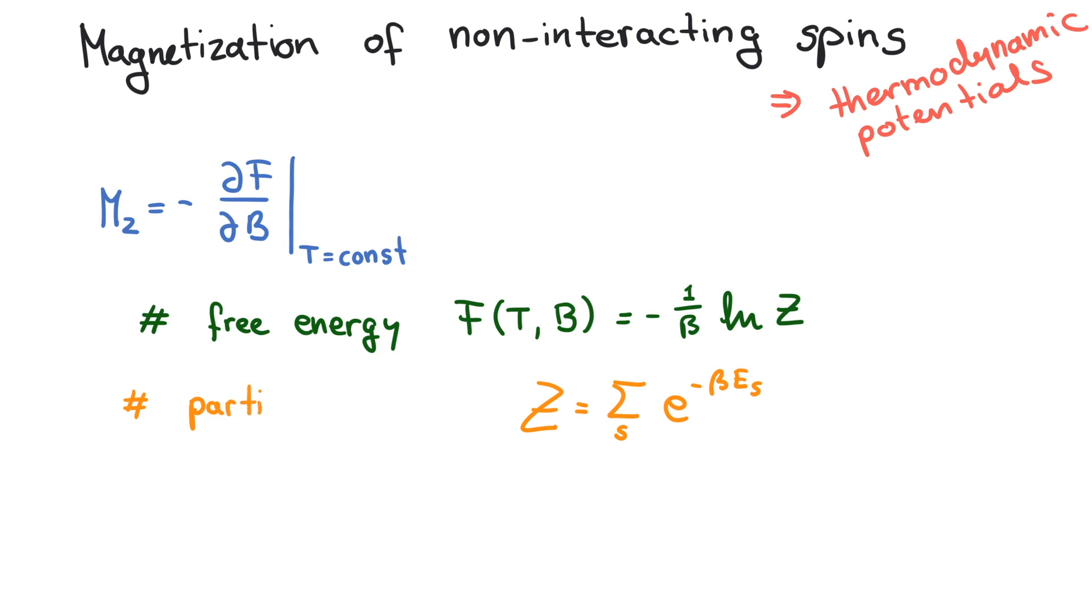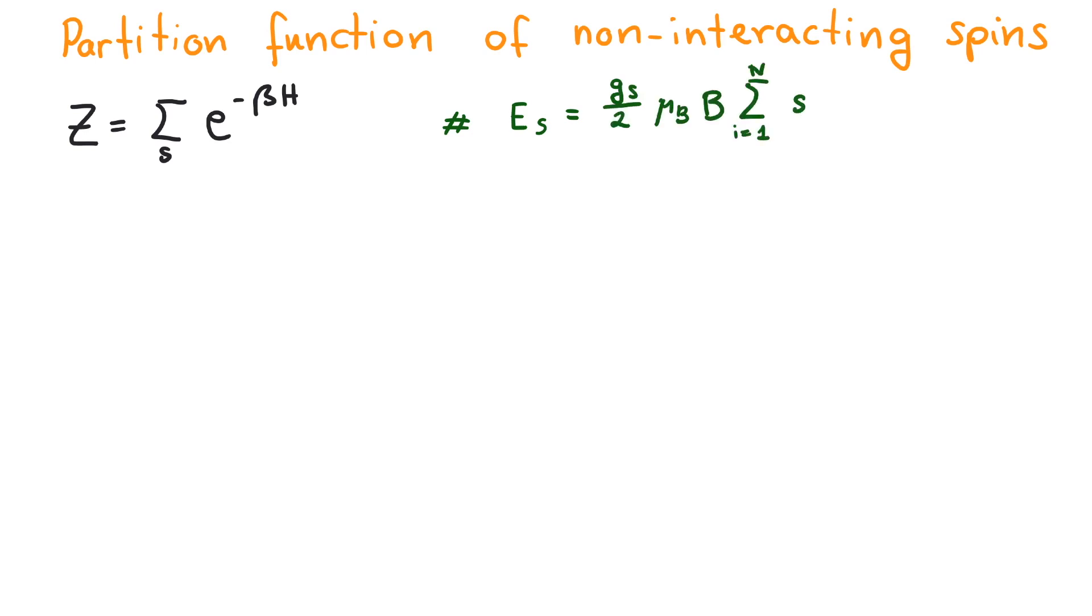Z is called partition function or generating functional because it is possible to compute or generate all possible observables from it. So let us compute Z in order to generate the observable of our interest, which is the magnetization.